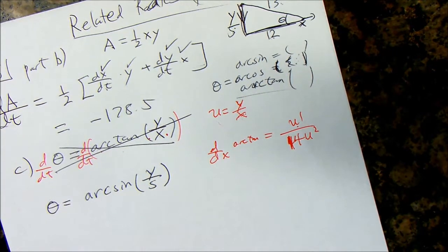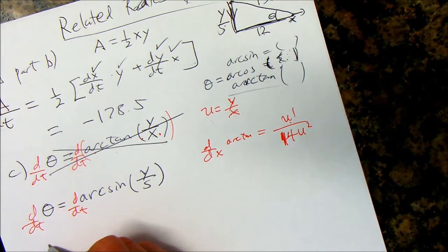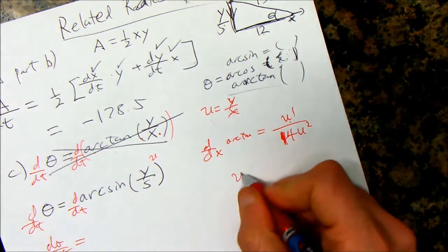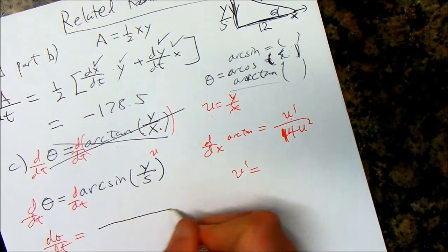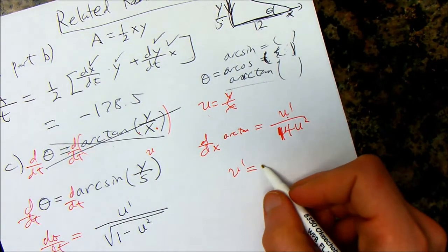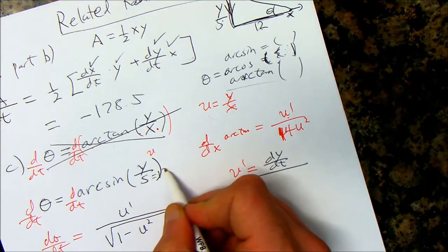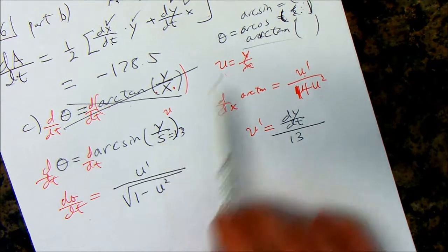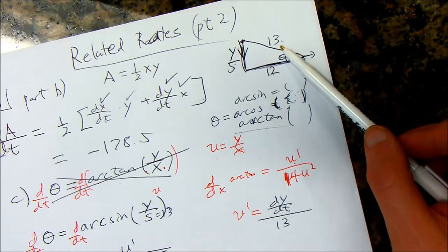So, theta equals arc sine of y over s. Now, this I want to take the derivative of. The nice thing is that if I remember this problem, s is not changing because s represents the length of the ladder. So, that's why this is the better one to pick. I don't have to deal with two variables of t.